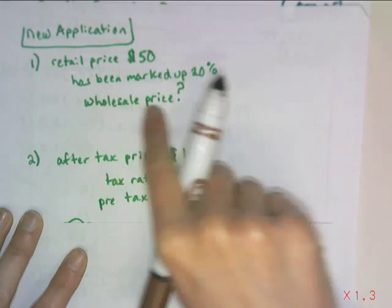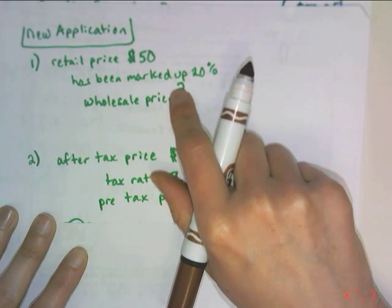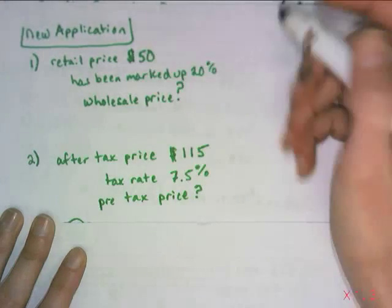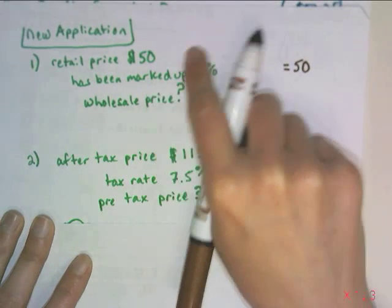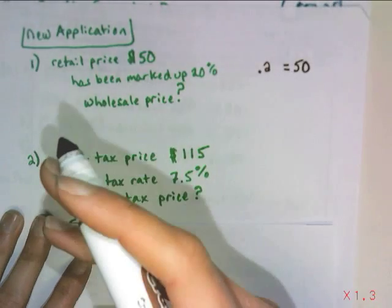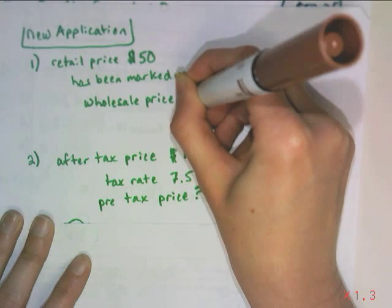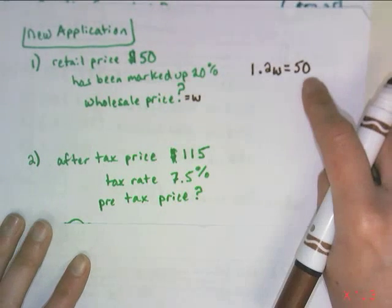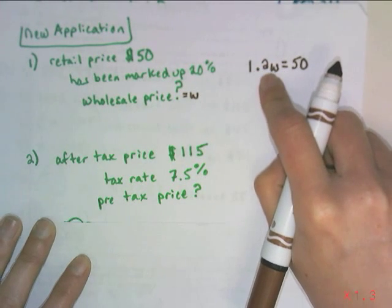So in other words, if you're looking at this in the context of what we just learned, if something has been marked up 20%, that means that you're paying 1.2 of something. So we know that the retail price, which is after it's been marked up, is 50. So once the thing has been marked up, we're going to be paying 20%, which is this, in addition to what it was before. And the thing is, we don't know what it is before, so we're just going to call that, we're going to define the wholesale price as W. So we're thinking 120% of some number is 50.